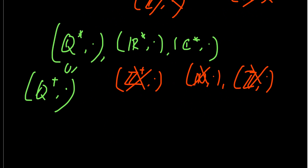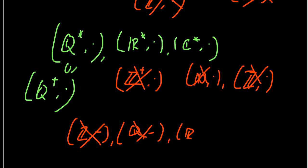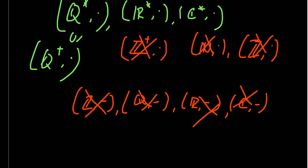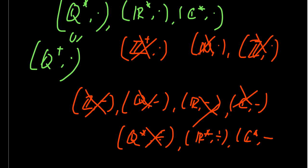More non-examples: the integers under subtraction don't form a group, since subtraction is non-associative. Similarly, the rationals, reals, and complex numbers under subtraction don't form groups. The same applies to division: Q*, R*, and C* under division are not groups because division is a non-associative operation. Associativity is a very powerful and essential axiom — it must hold for a group.